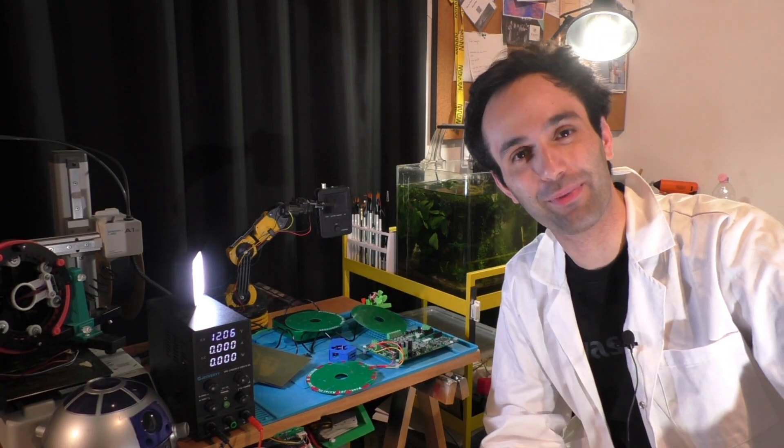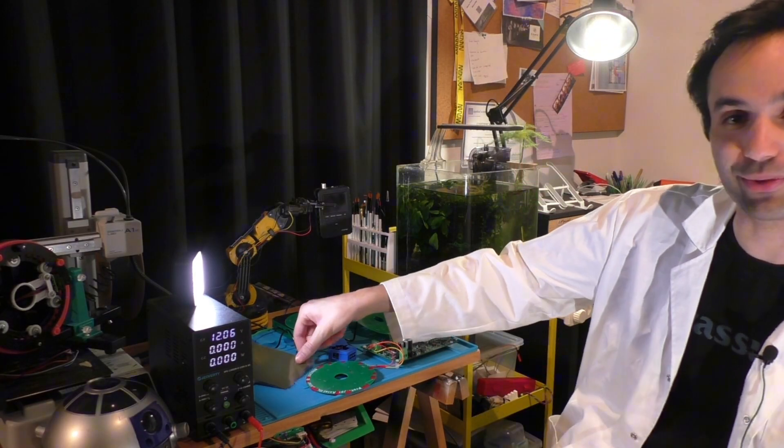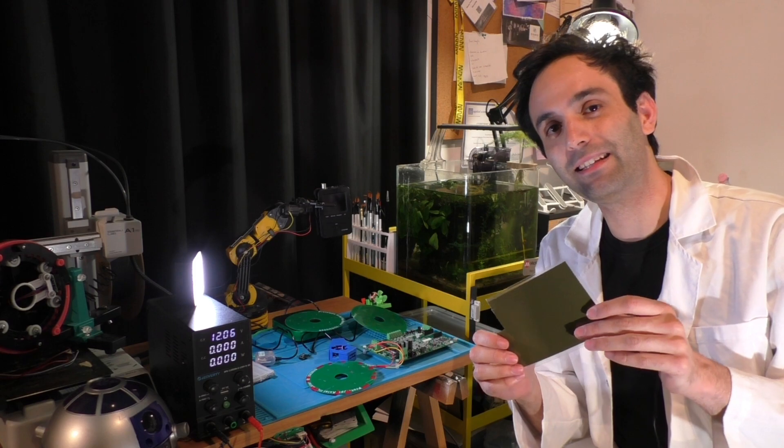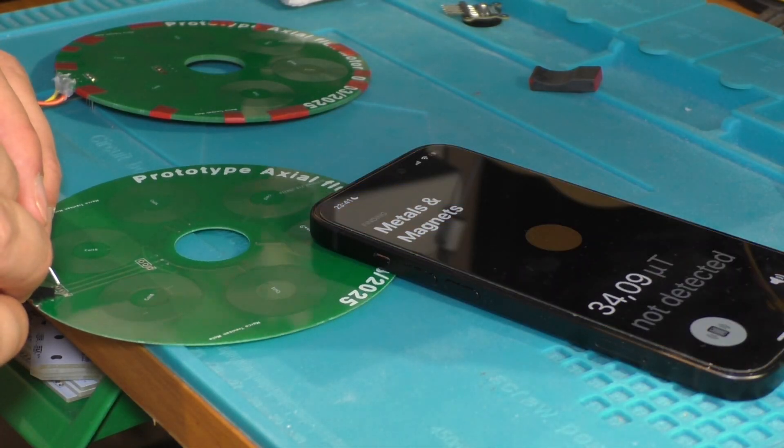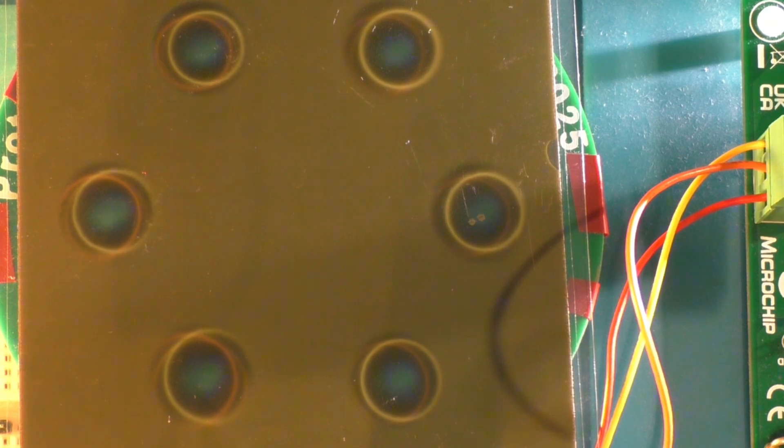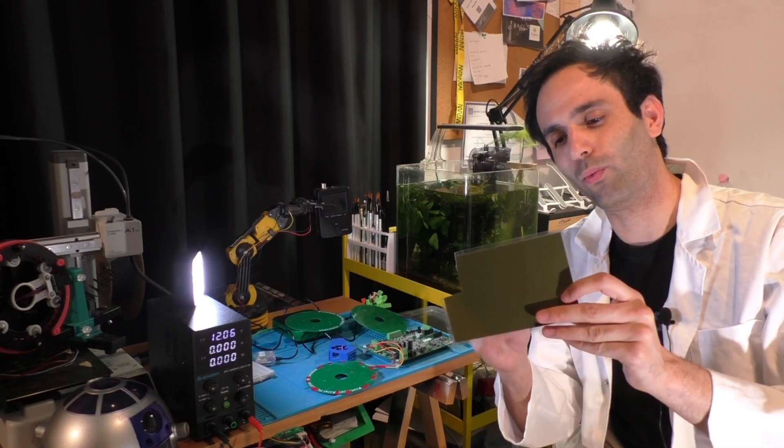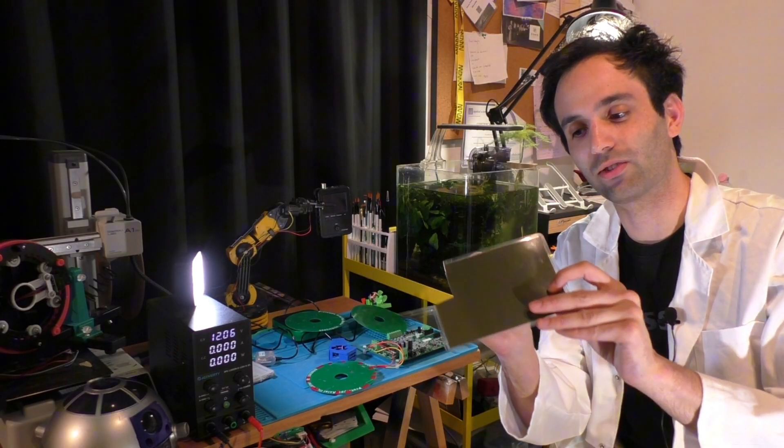Hey guys, so today we're going to do something a bit different. We're going to use this magnetic reactive sheet with the magnetic field generated by a motor. And as we can see, this is more or less how this sheet reacts.